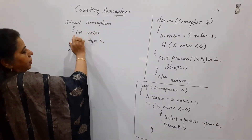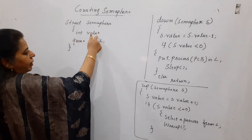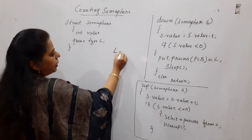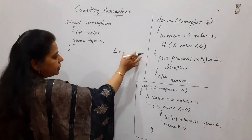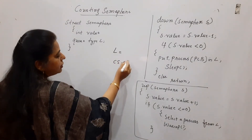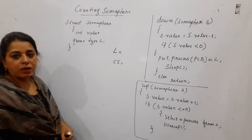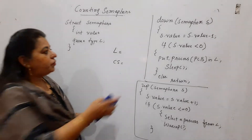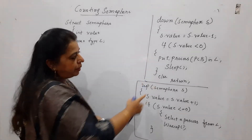It is a structure. You have written here a value which will store the value of the semaphore, and there is a queue. In this particular queue, we will be storing all the processes that are getting blocked, and we will also maintain a separate list wherein we are maintaining all the processes that are entering into the critical section.